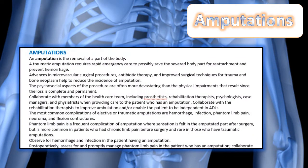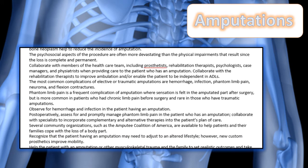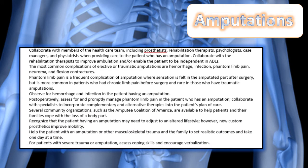Your notes contain a review of amputation and removal of any part of the body — be sure to review those notes. Advances in microvascular and surgical procedures and antibiotic therapy have helped a lot with surgical techniques for trauma and bone neoplasm, so that we do not have as many amputations as we used to. Collaborative care is going to be important because the patient is going to have a prosthetist, a rehab therapist, a psychologist, case managers, and different people who will probably manage that patient.